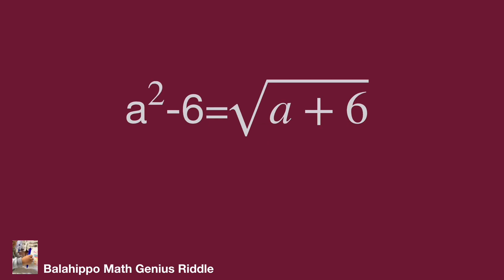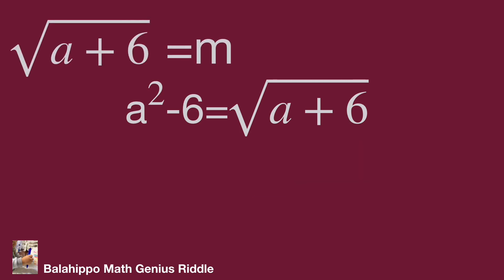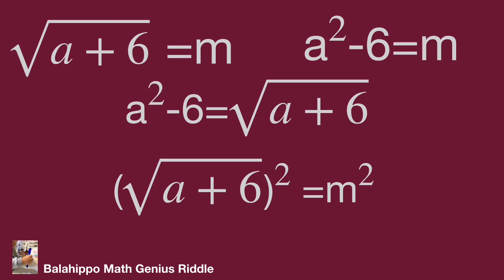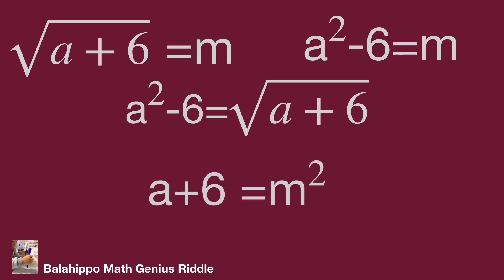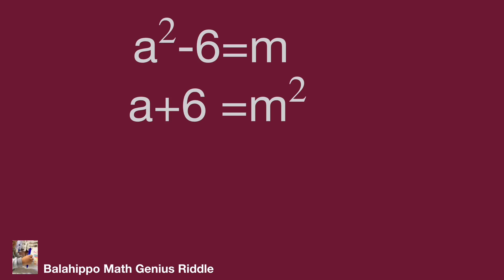Let's try a different approach. Look at the given equation — we have a plus 6 inside the square root. Can we make a proper relation with a squared minus 6 on the left side? So, I define the square root of a plus 6 equal to m. Substituting gives the equation: a squared minus 6 equals m (equation 1). Squaring both sides of the definition gives a plus 6 equals m squared (equation 2).